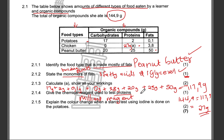For 2.2, explain the color change when a starch test using iodine is done on potatoes. When you do a starch test using potatoes, you add a few drops of iodine. The color will change to blue-black, which indicates the presence of starch in the potatoes.